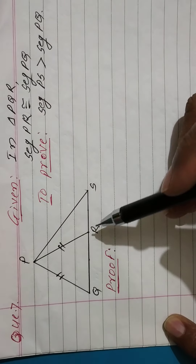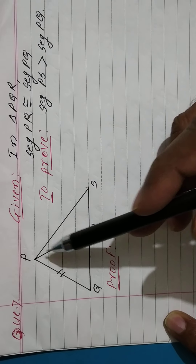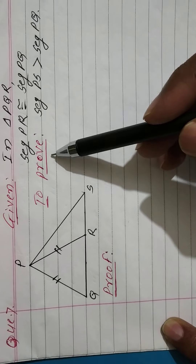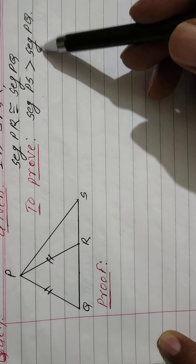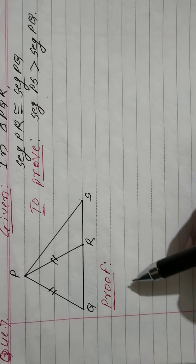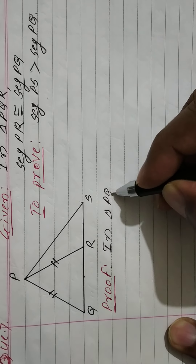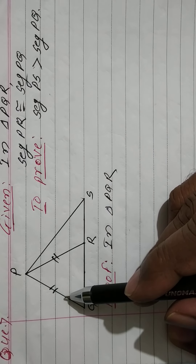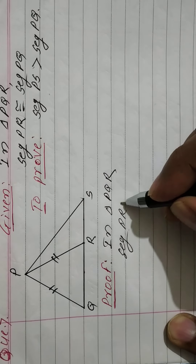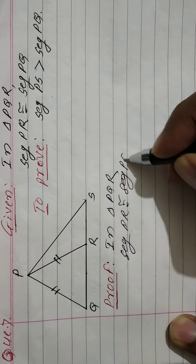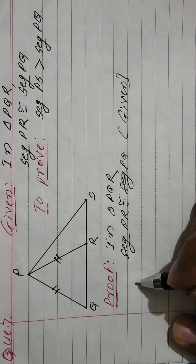Question number 7. A figure is given in which, in triangle PQR, segment PR is congruent to segment PQ — this is given. To prove: segment PS is greater than segment PQ. Proof: in triangle PQR, segment PQ is congruent to segment PR — given. Two sides are congruent.